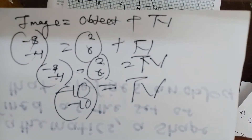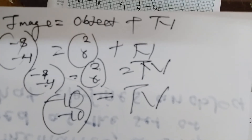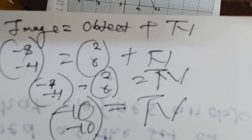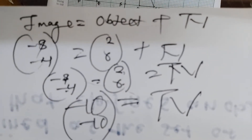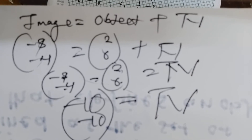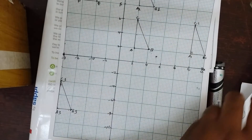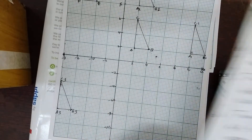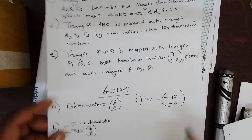That's another way of getting it. So that was part D. Then we go to E.